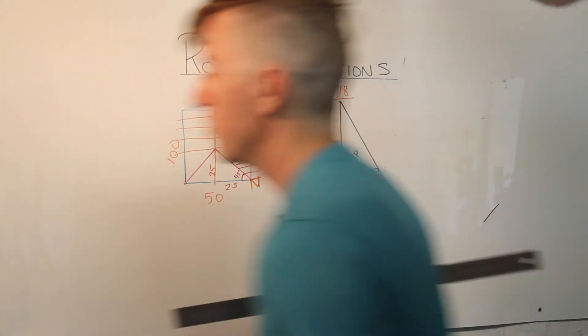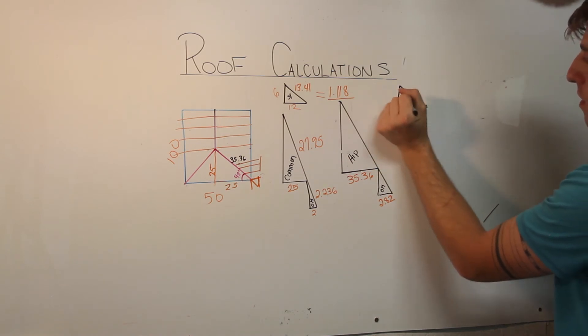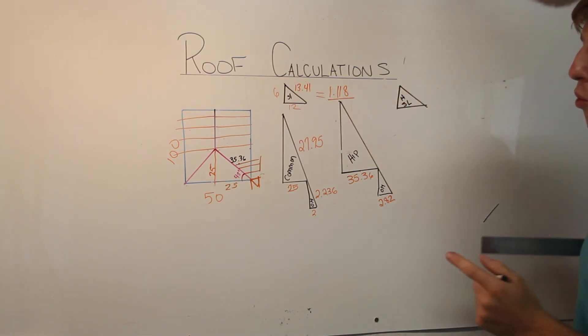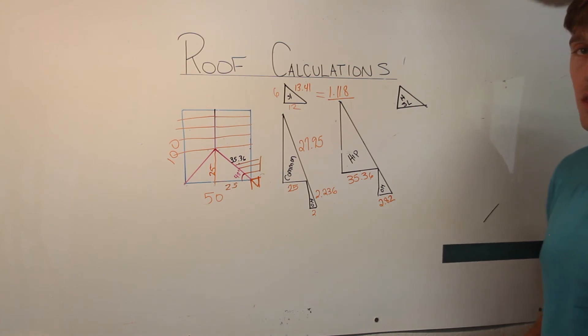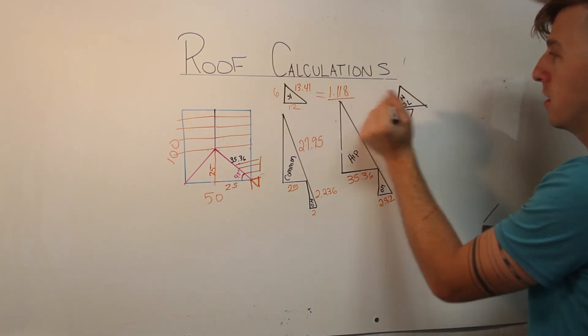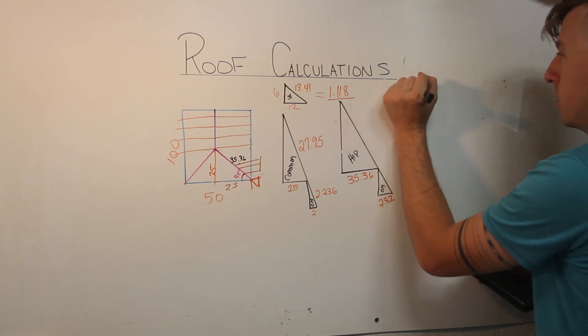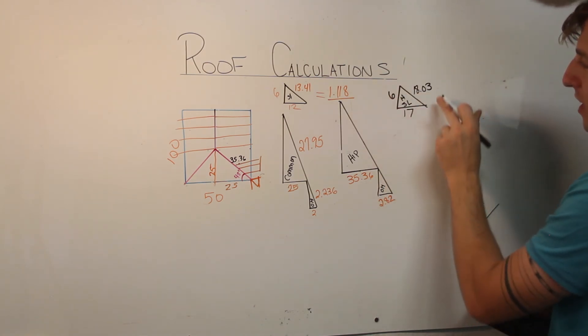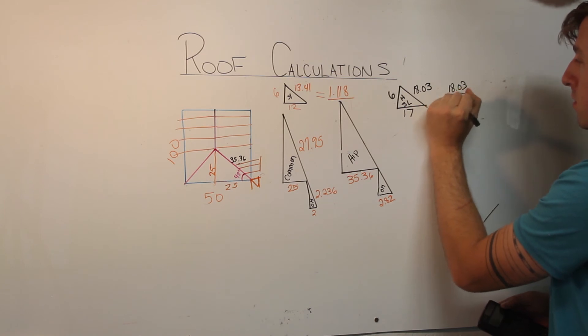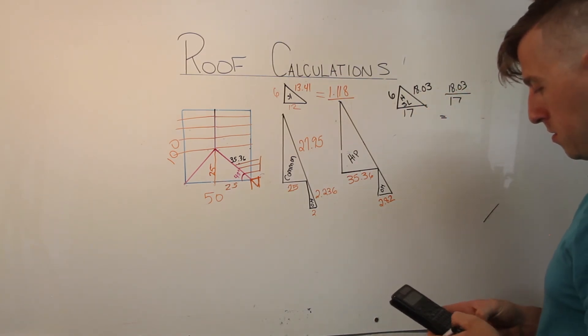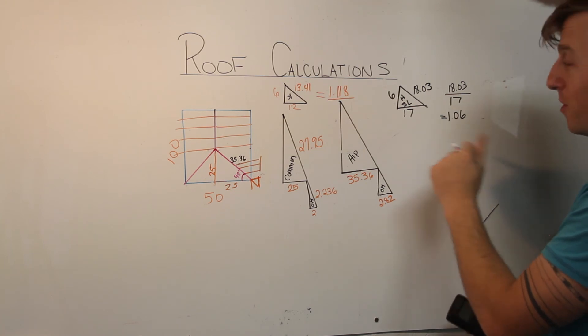So now we can draw another triangle, which is going to be the slope triangle for the hip. Hip slope. Where a common rafter has a base unit of 12, a hip rafter has a base unit of, I think it's 16.97, but we generally just say 17. The rise is the same, and we can figure this out again. It's 18.03. 18.03 divided by 17 equals 1.06.